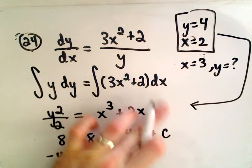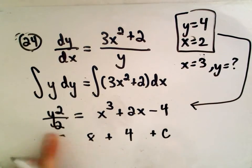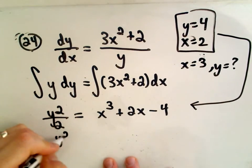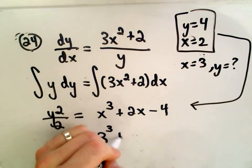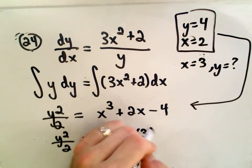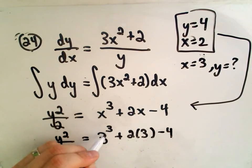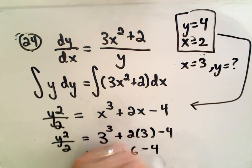Okay, so now we can just simply replace our c value with negative 4. And now they simply want us to figure out the value of y when x equals 3. So we'll now plug in our new bit of information that x is 3. So we'll get 3 cubed plus 2 times 3 minus 4. 3 cubed is 27. 2 times 3 is 6 minus 4.